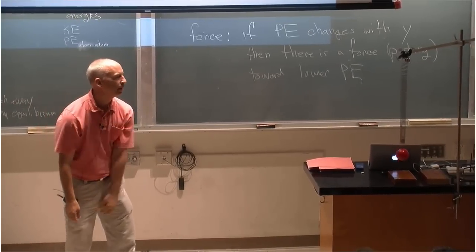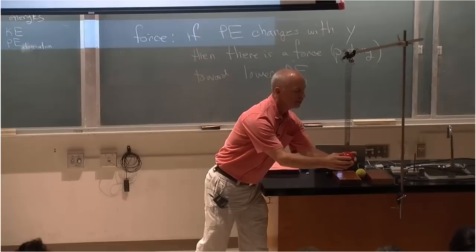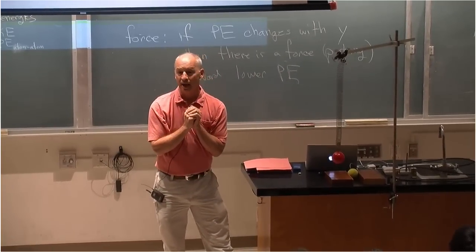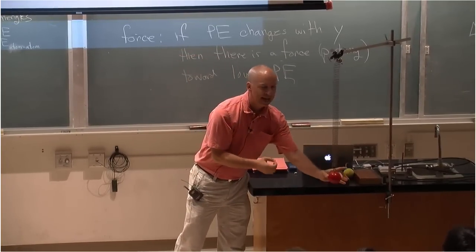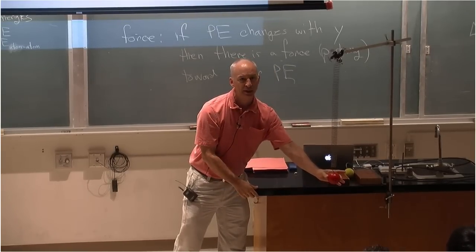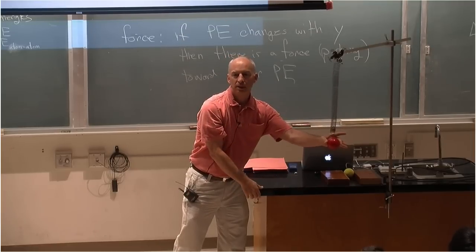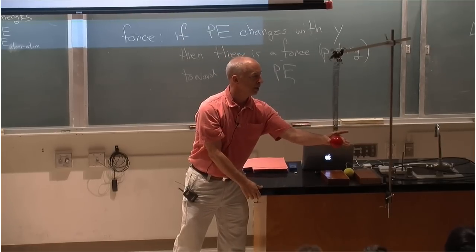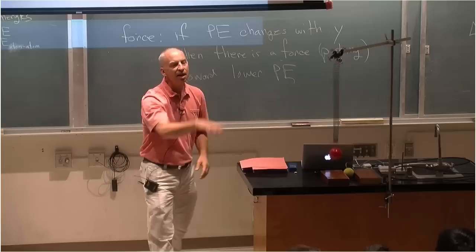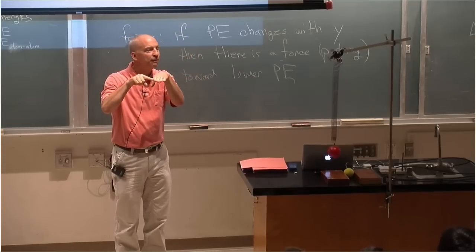What's the lowest potential energy for this thing? It's right where it is right now. If I pull it down, there's a force upward trying to pull it to lower potential energy. If I push up, there's a force downward trying to pull it to lower potential energy. The reason it oscillates is because at equilibrium there's no force.